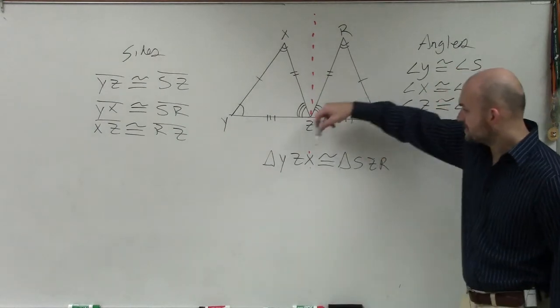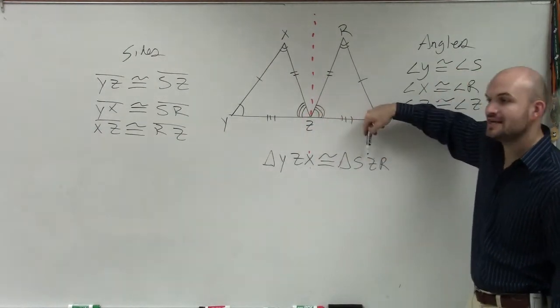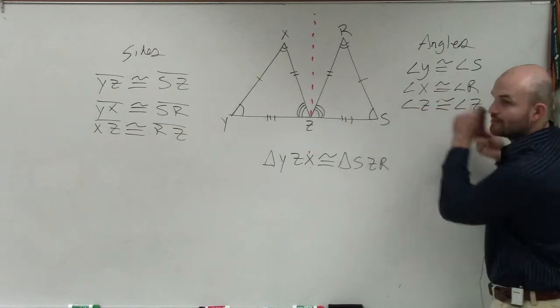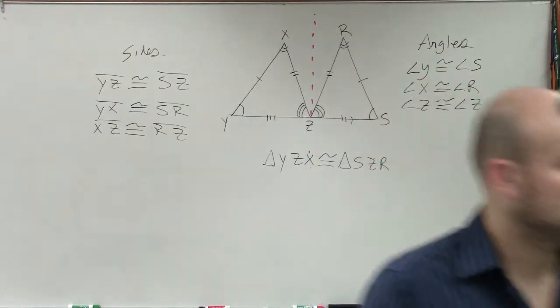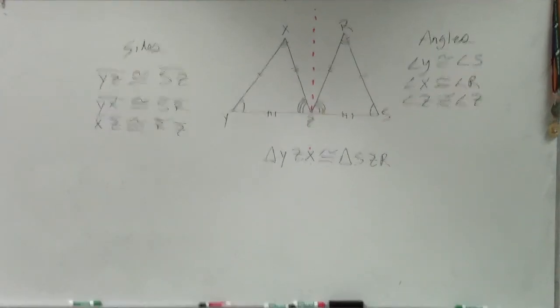All right. Notice how the z is in the middle. y and the s are beginning. And y or s are what are congruent angles. OK. Cool. Make sense? Kind of? A little bit? Yeah. All right.